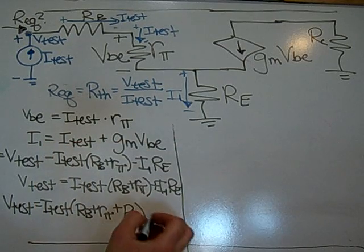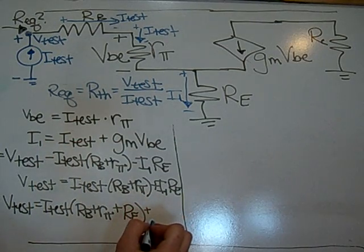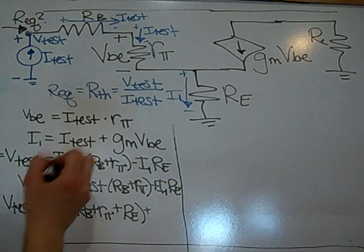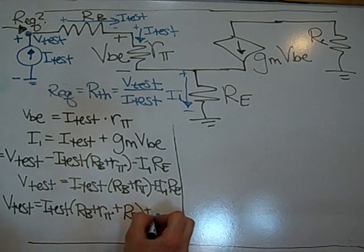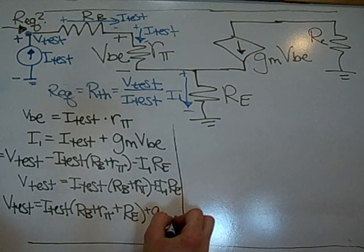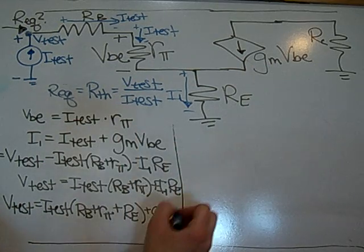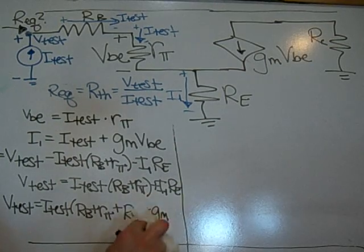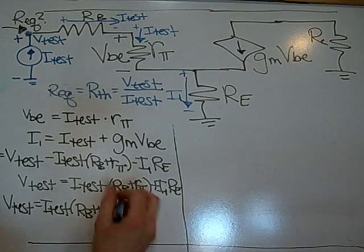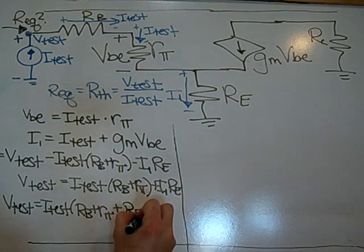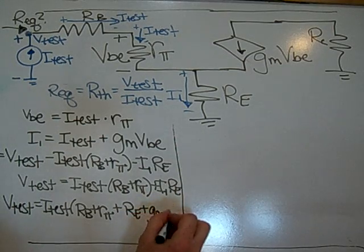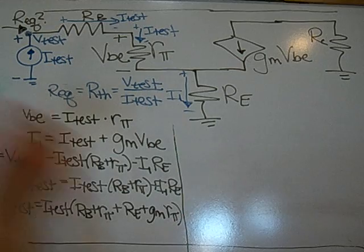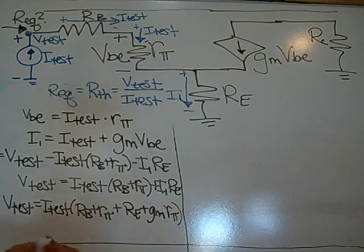And then a plus gm V-be, which is I-test times R-pi. So gm and then I-test times R-pi. So this is plus, I'm going to write it as Re plus gm R-pi. And that's also Re times Re.